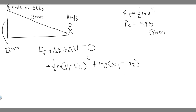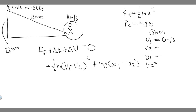Let's write down what each variable is. Subscript 1 means at the top, subscript 2 means at the bottom. So v1, the initial velocity, is zero. v2, the velocity at the bottom, is 11 meters per second. y1, the height at the top, is 230 meters. y2, at the bottom, is zero meters.